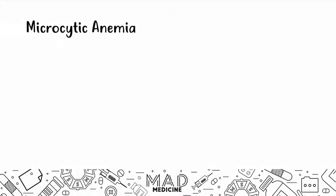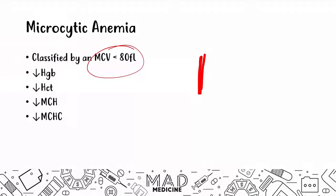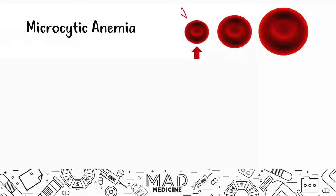You will most likely be tested on iron deficiency anemia in one form or another. Iron deficiency anemia is a microcytic anemia, the hallmark of which is an MCV that is going to be less than 80. Everything else is also going to be decreased: hemoglobin, hematocrit, mean corpuscular hemoglobin, and MCHC — your mean corpuscular hemoglobin concentration — are all going to be decreased. You're also going to see very small red blood cells, which is what the MCV is telling you.